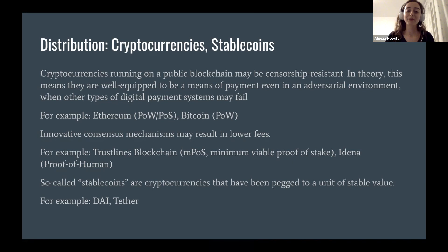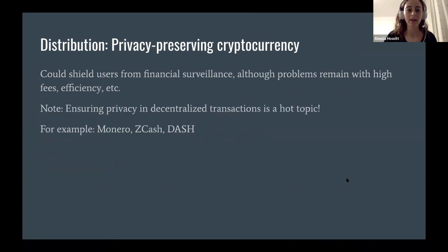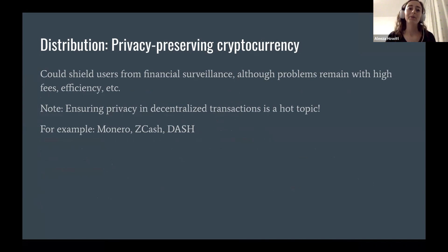There are different types of cryptocurrencies that may be better or worse depending on your goals. If you're looking for a stable unit of value, you should use one designed for that purpose. Privacy-preserving cryptocurrencies are a hot topic and arguably ideal, because many cryptocurrency transactions are easy to de-anonymize. If you want to protect people from that kind of threat, you need to focus on a privacy-preserving system.